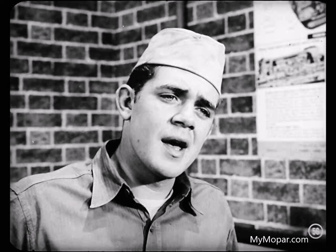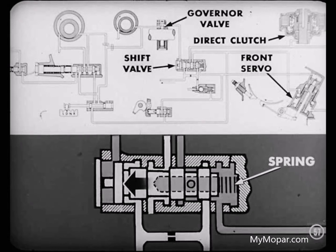I get that, Jack. But as the car slows down, how does the transmission shift back down? Well, as the car speed decreases, governor pressure also decreases. So, when the car speed drops to about 9 to 12 miles per hour, the governor pressure is overcome by the valve spring, and the shift valve is returned to the downshifted position by the spring.